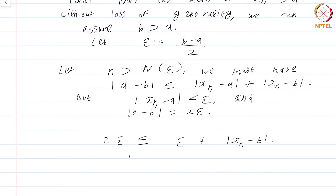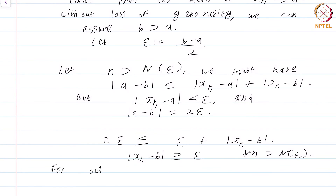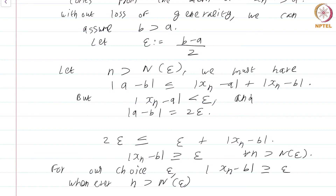That means |x_n minus B| is greater than or equal to epsilon, and this is true for all n greater than N(epsilon). What this is really saying is that for our choice of epsilon, |x_n minus B| is greater than or equal to epsilon whenever n is greater than N(epsilon).